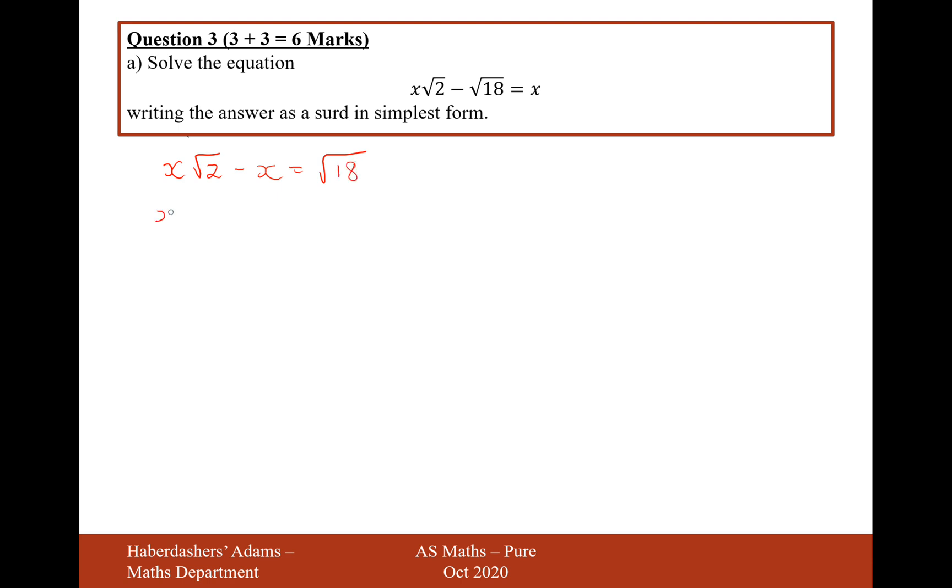Now let's factorize out the x, so it's going to be x(√2 - 1) equals... now √18 is 9 times 2, so that'll be 3√2.